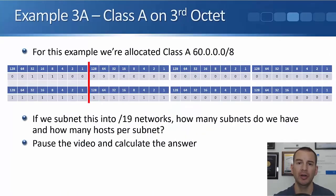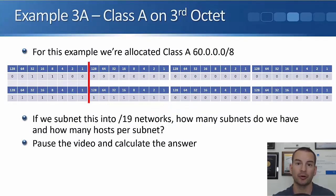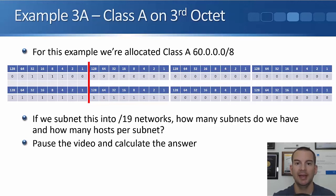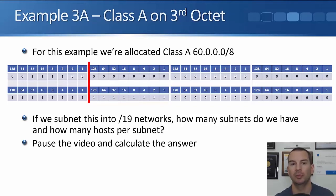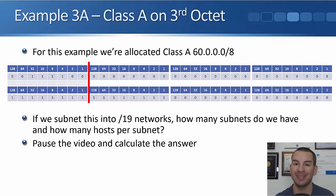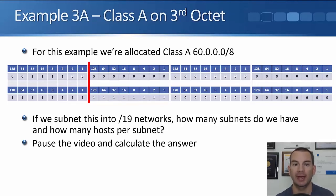Now we're going to do a class A on the third octet — the previous example was a class A on the fourth octet. This one can get a little bit confusing so pay attention. We've been allocated 60.0.0.0/8. If we subnet it into /19 networks, how many subnets do we have and how many hosts per subnet? Pause the video and figure out the answer.